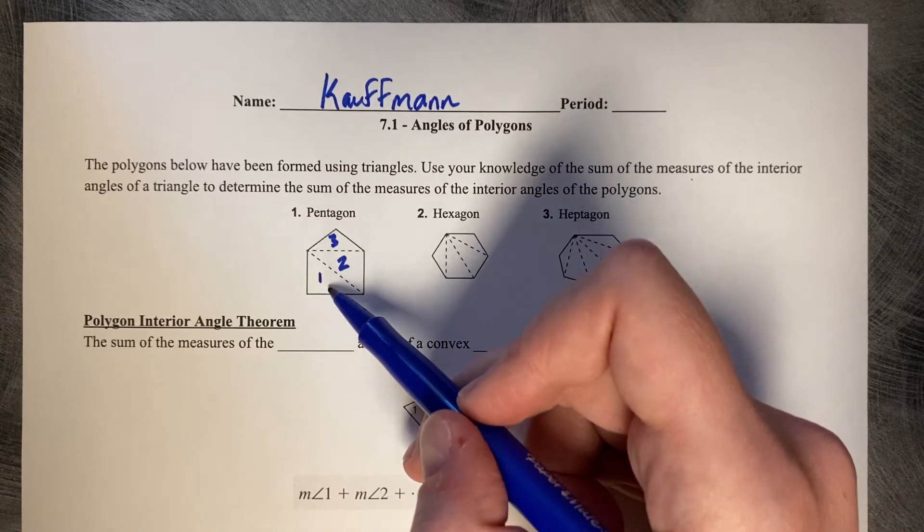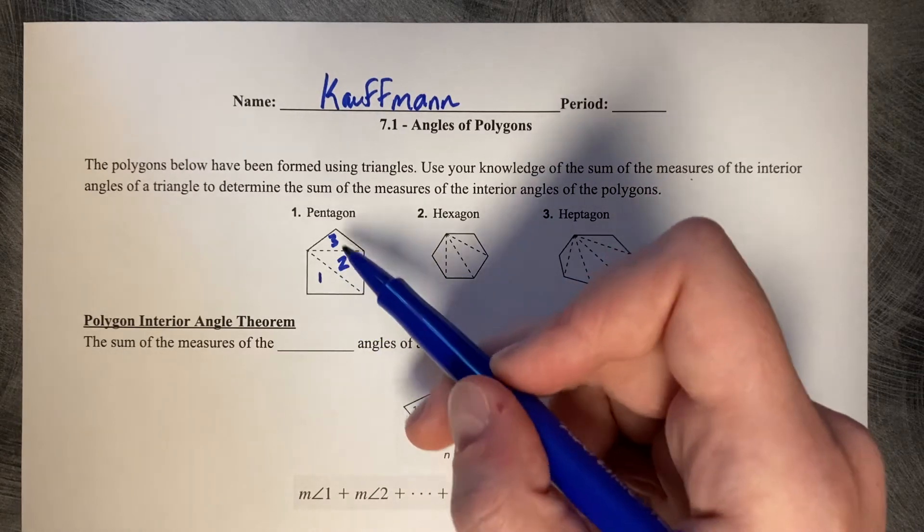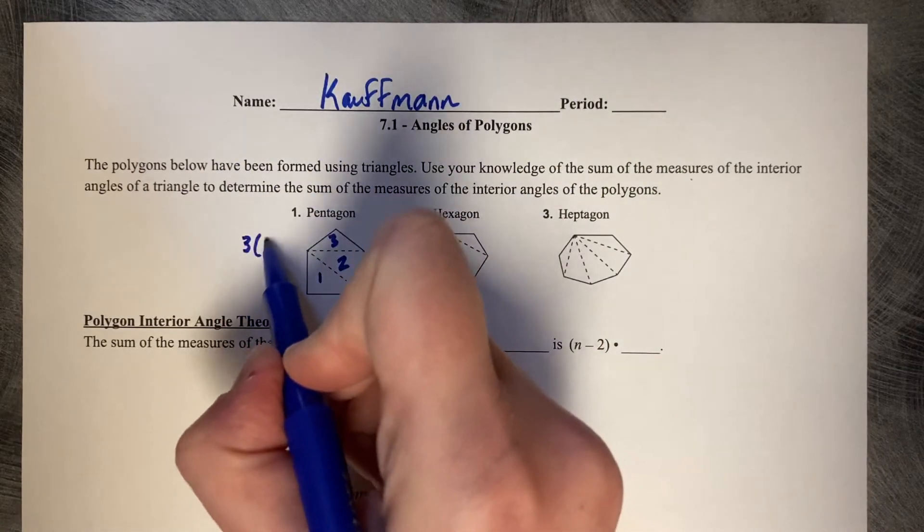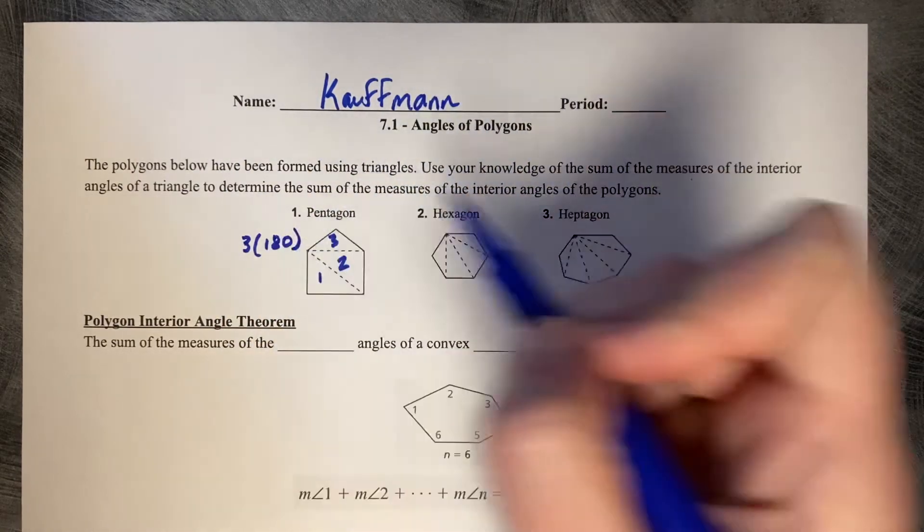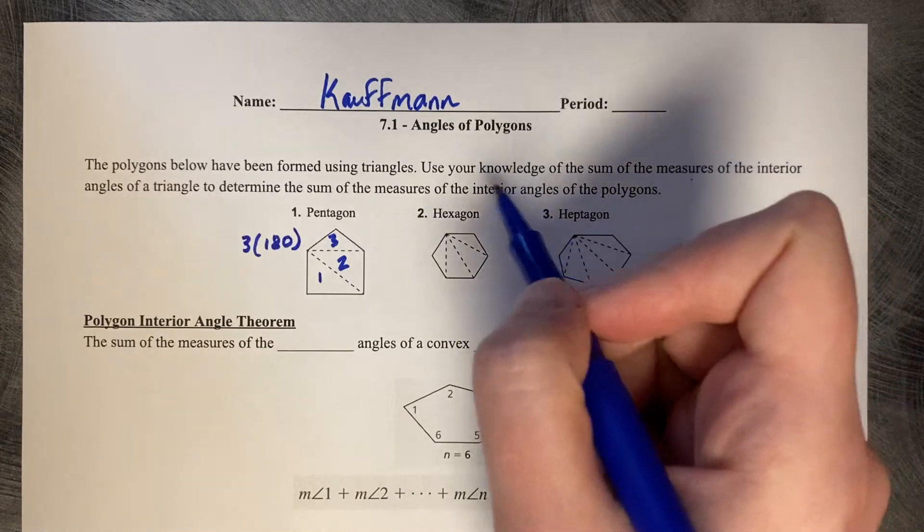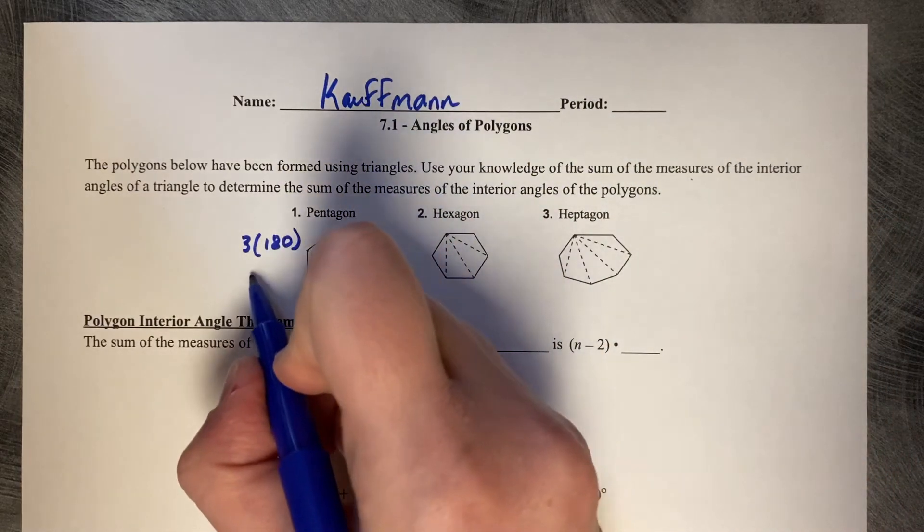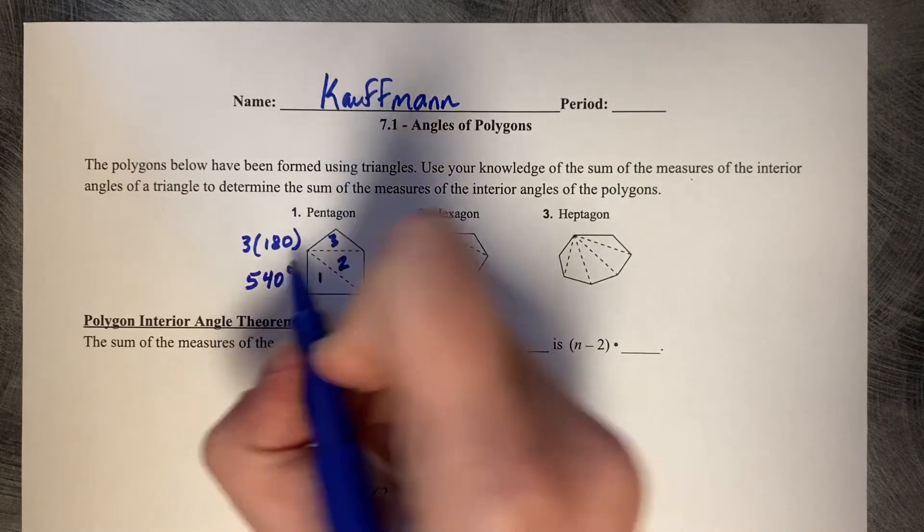So this is going to be 180, another 180, and a third 180. So three times 180 is going to give me a total sum of degrees inside of there as 540 degrees.